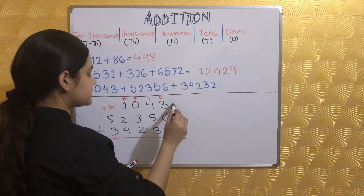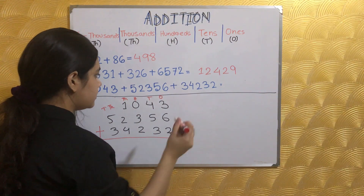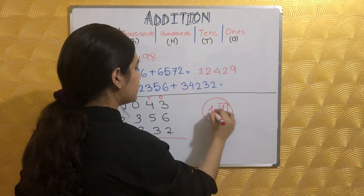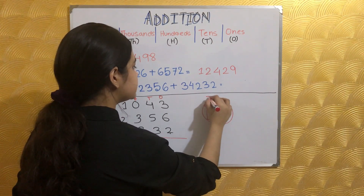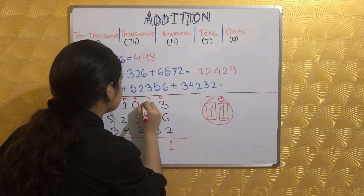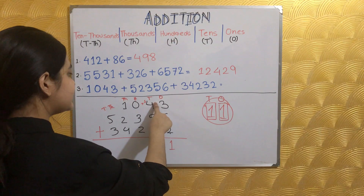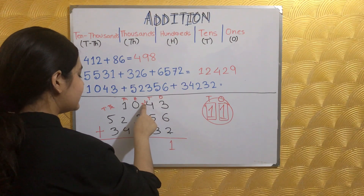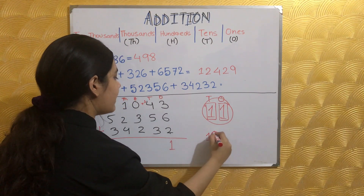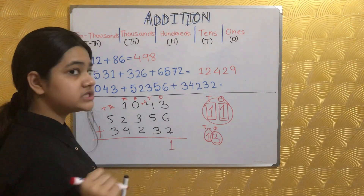Let's add: 6 plus 3 is 9, plus 2 is 11. We have a two-digit number, so we carry the 1 (tens place) and write 1 (ones place). Next column: 3 plus 2 is 5, plus 4 is 9, plus 1 carried is 10, plus 3 is 13. We write 3 (ones place) and carry 1 (tens place).